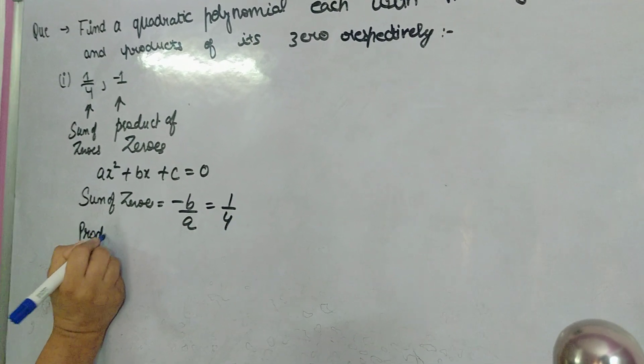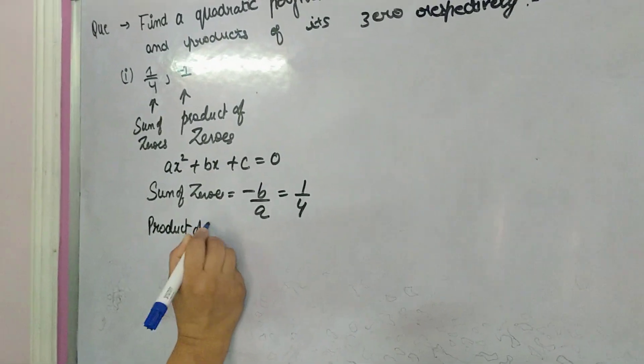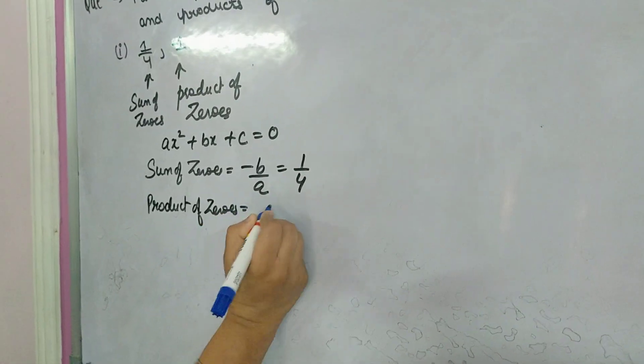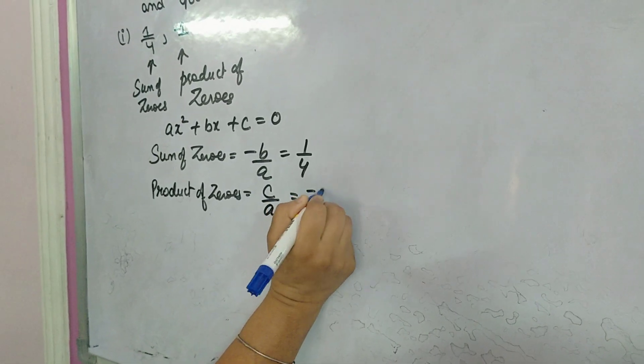And product of zeros, what is it? You all should know, if not then learn it. It is c by a. Its value is given as minus one.